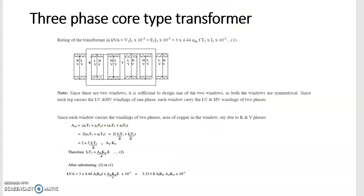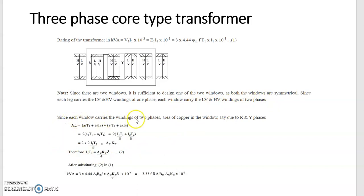Now talking about the 3-phase core type transformer. As you have already derived the equation for single phase, multiply the same equation by 3. Since there are 2 windows in the 3-phase core type, it is sufficient to design one of the 2 windows as both windows are symmetrical. Since each leg carries the low voltage and high voltage winding of one phase, each window carries the low voltage and high voltage windings of 2 phases respectively. This is the key difference between single phase and 3 phase.